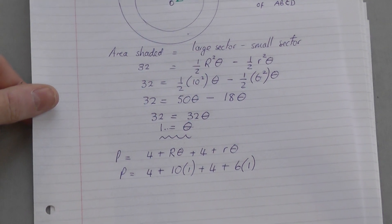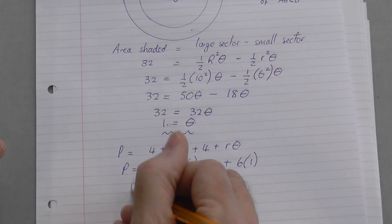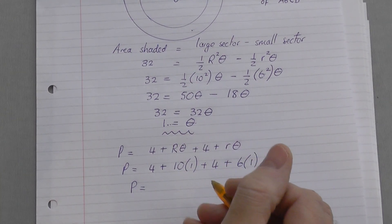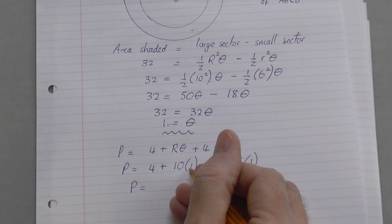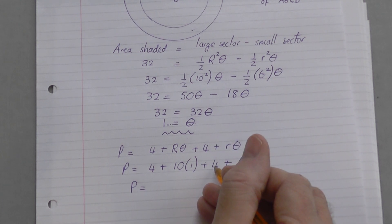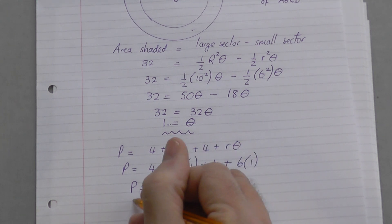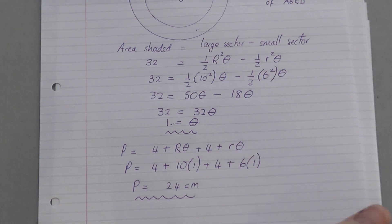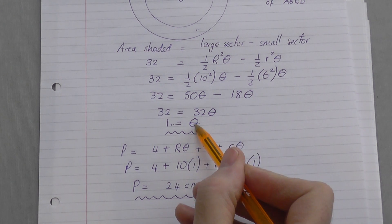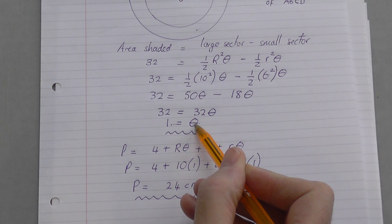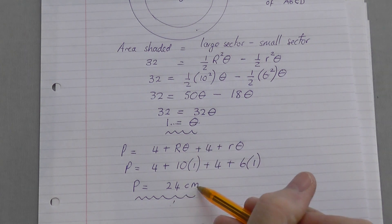So the perimeter then of this shape that we're looking for is 4 plus 10 is 14 plus 4 is 18 plus 6, 24 centimeters. So find the theta value first and then that enables you to work out the perimeter. That's the end of this question.